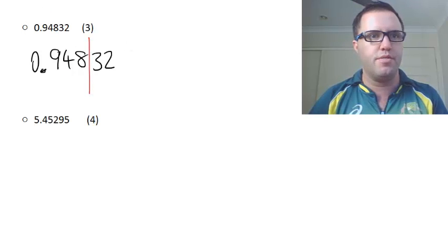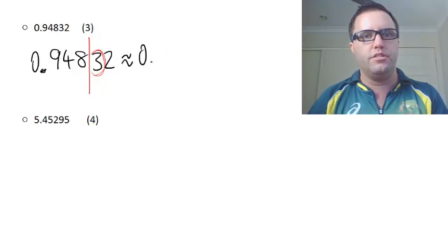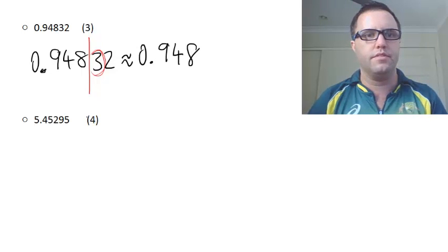Let's have a look at the last couple of examples. So I'm going to round this one off to three decimal places. 0.94832. I'm going to round that to three decimal places. So it's going to be chopped there. Have a look at this number. That's case two. So it's less than five. So we're just going to chop the number off at our line and we'll end up with 0.948.